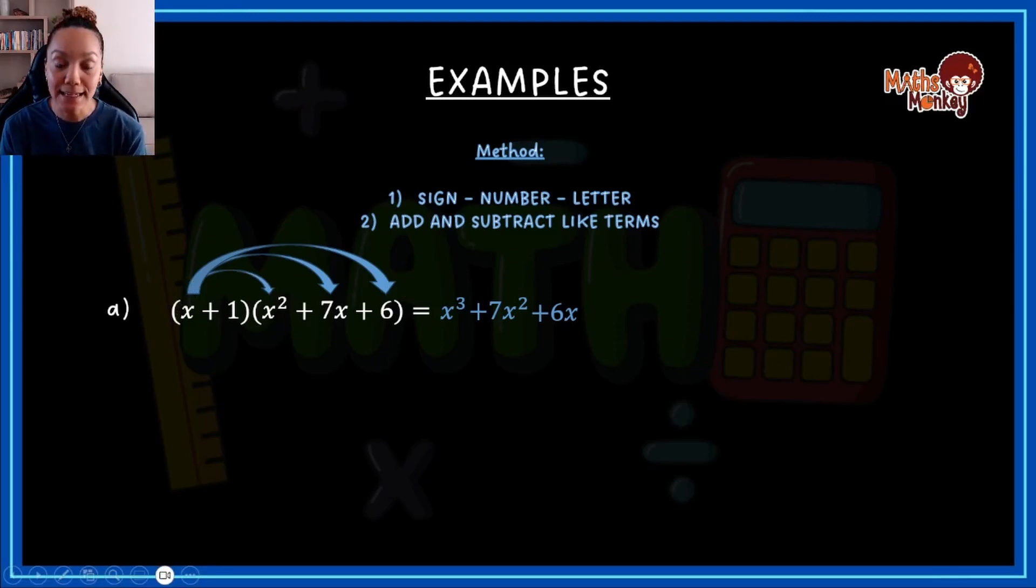So I've taken the first term and multiplied it by every single term in the trinomial bracket. Then I'm going to now take the second term and do the same. So I'm going to say 1 times x squared gives me x squared, 1 times 7 gives me 7x, and then 1 times 6 gives me 6.